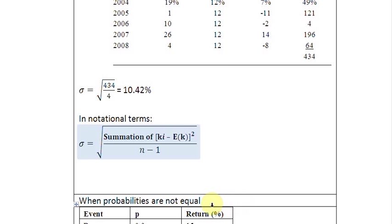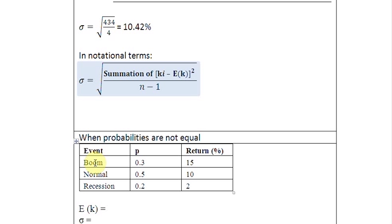The second possibility is when we are presented with a scenario where probabilities of events are not equal. If they are not equal, let's look at this data. There are three possible events that we have assumed: possibility of a boom, possibility of a recession, and then something in between these two extremes in normal scenario. And in this column here, we write down the probabilities of these events. 30% chance of a boom, 50% chance of a normal time, and 20% chance of a recession. And then we write down the returns associated with these outcomes. So if there is a boom, there is going to be a return of 15% on this particular asset. During normal times, the return would be 10%, and during recession, the return would be 2%.